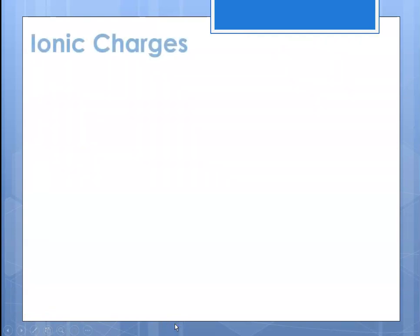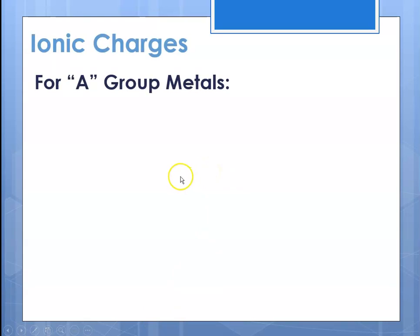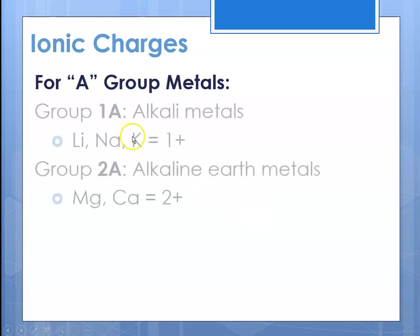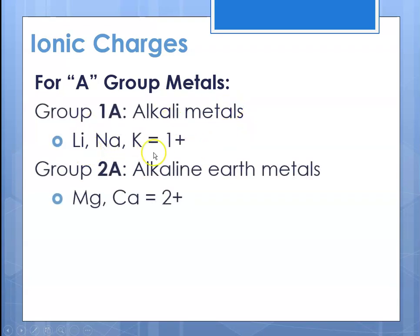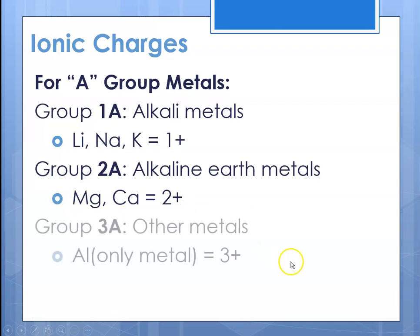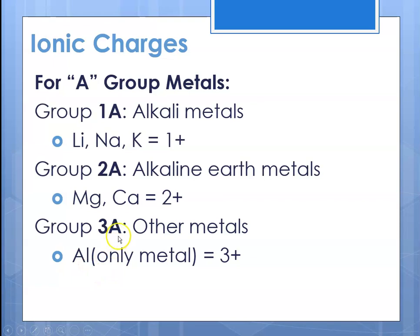For group A metals — the representative elements in the S and P block — group 1A alkali metals form a +1 ion when they form an ion. Group 2A metals form a +2 ion. For group 3A metals, we'll concern ourselves with aluminum, which forms a +3 ion.